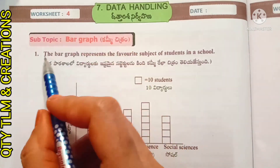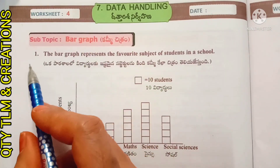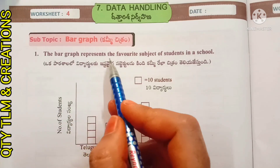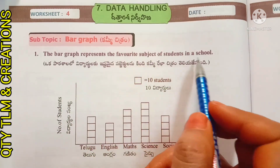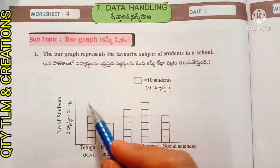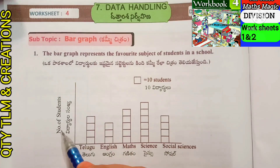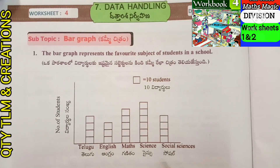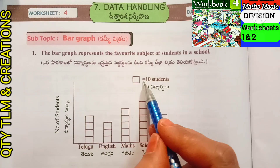Next, Worksheet 4. Subtopic: Bar Graph. First question: the bar graph represents the favorite subject of students in a school. The bar graph shows number of students on one axis and subjects — Telugu, English, Math, Science, Social — on the other axis.